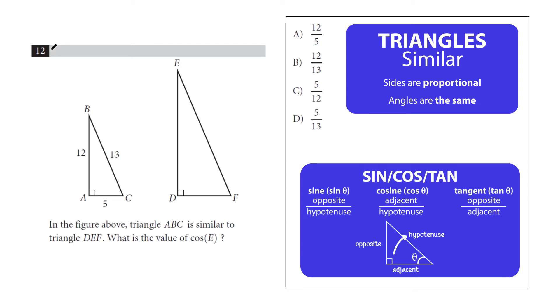Okay, so the key term to note here is this word similar. Now what does similar mean? It means that the sides of the triangles are going to be proportional, but it also means that the angles are going to be the same.